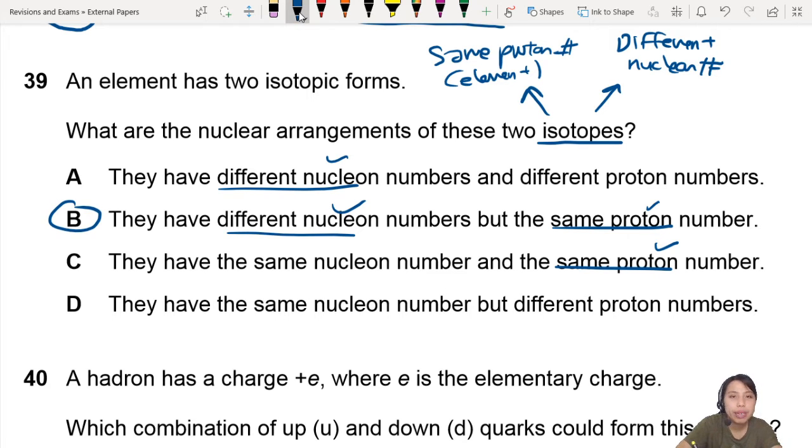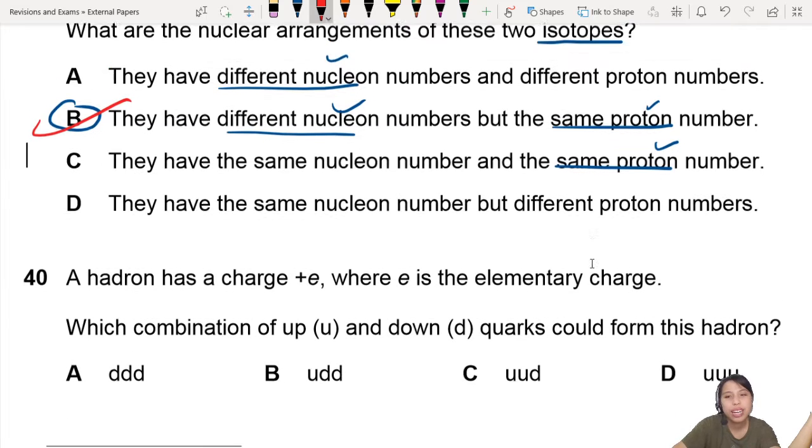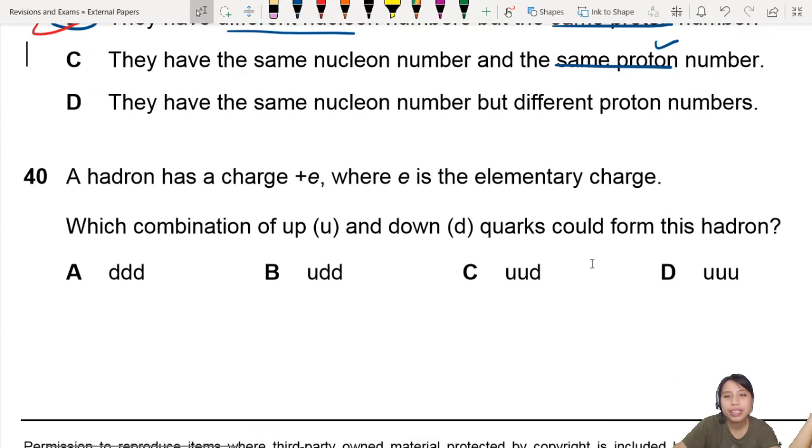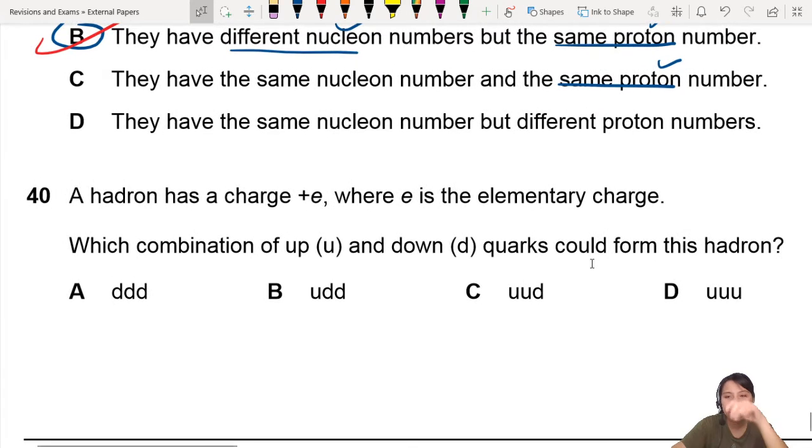This one is 3 marks. Please, make sure you got this correct. Anyway, might as well go on to the last one, since it's a short one. A hadron has charge positive E, where E is the elementary charge. Which combination up-down could form this hadron?